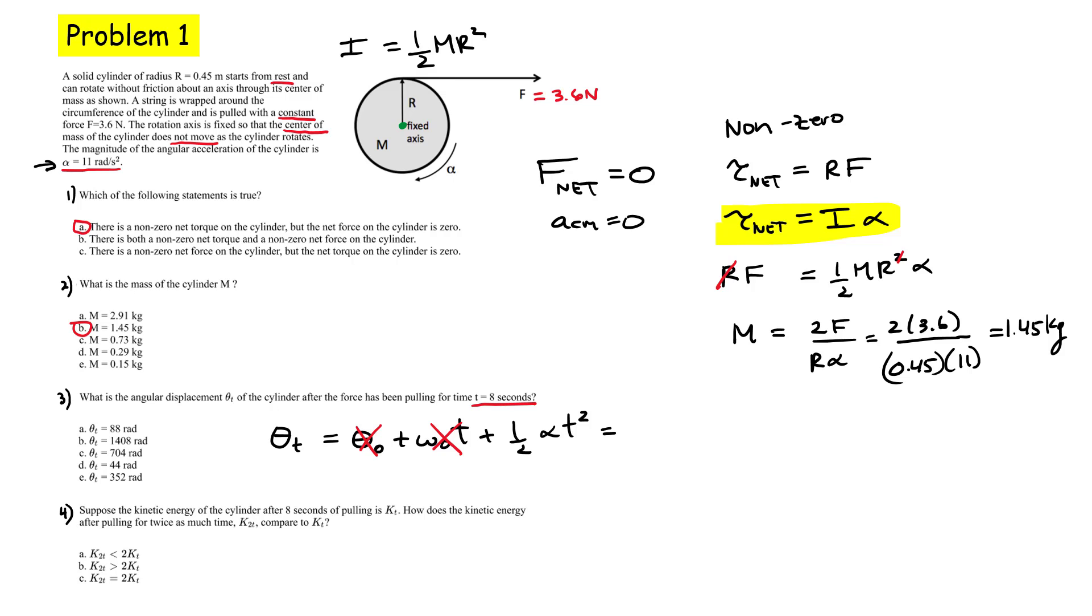So the only thing we have left now are these last terms. So we have one half. Our angular acceleration is 11 radians per second squared. And my time was eight, and I can't forget to square that value. If you substitute everything inside, you should get 352 radians. And that corresponds to choice E. That's my displacement.